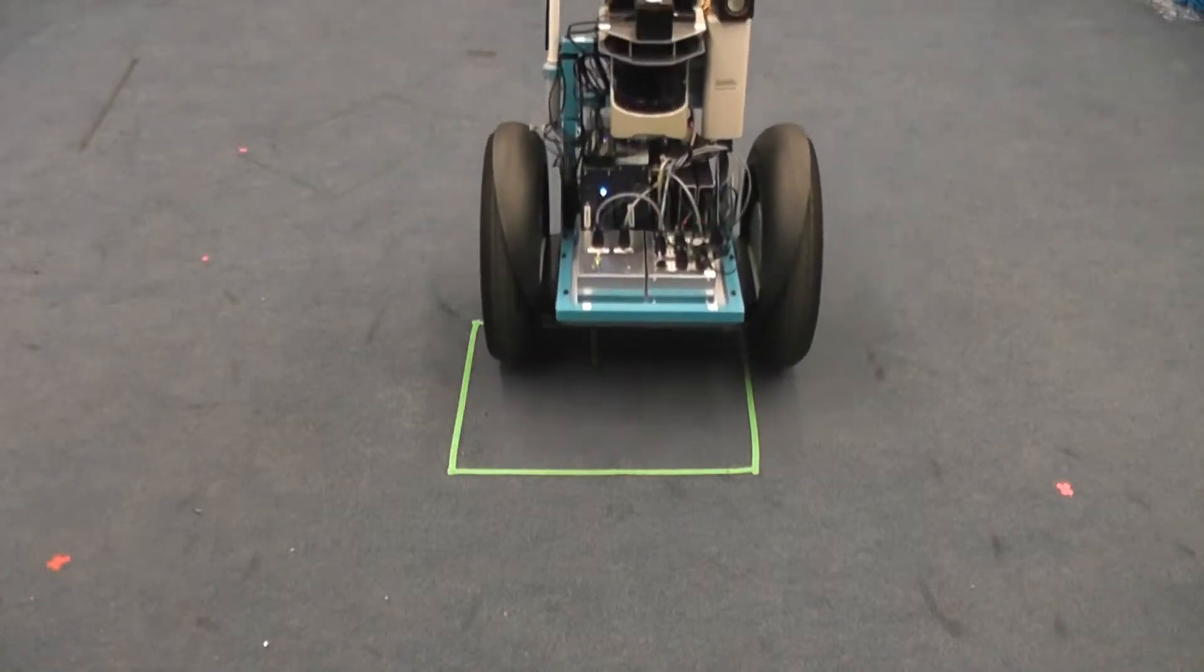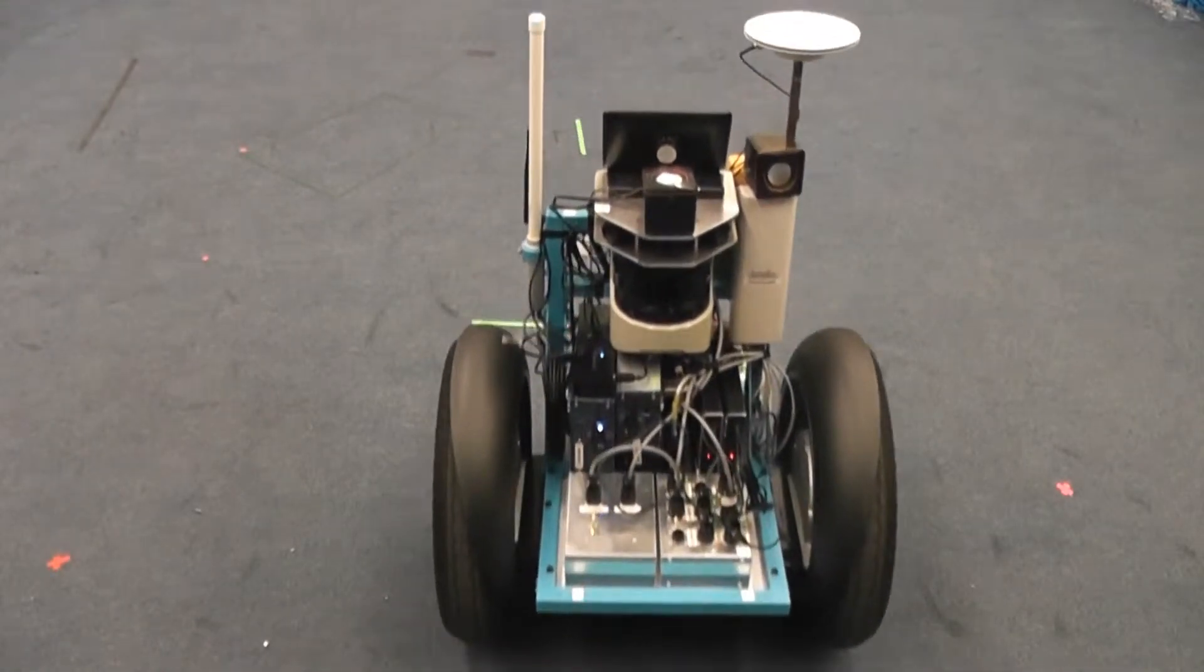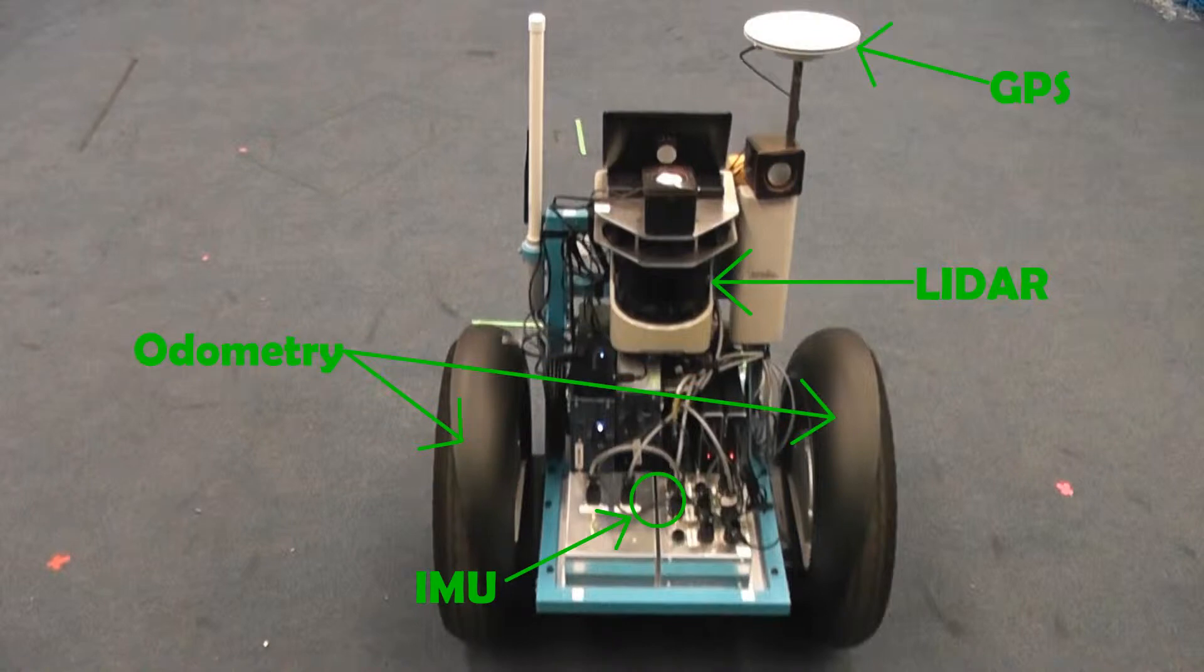We use five main sensors to perceive the environment around us: the LiDAR, an inertial measurement unit, odometry from the Segway wheels, the GPS, and three cameras.